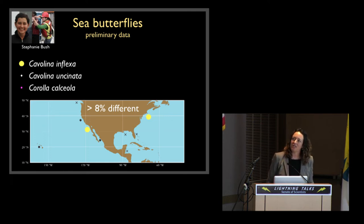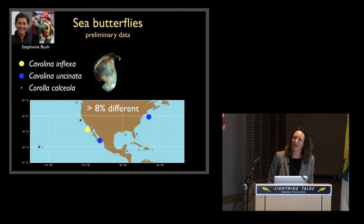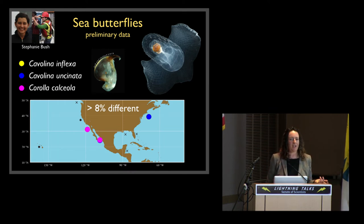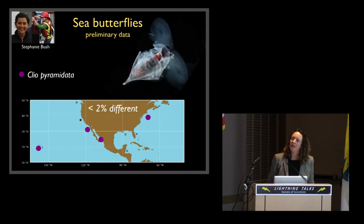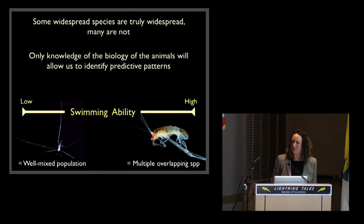She's looked at three species that were supposedly very widespread. Cavolinia inflexa, collected off California and in the North Atlantic, showed greater than 8% genetic difference. Cavolinia uncinata, a similar story. Corolla calceola, found in the Gulf of California and off the coast of California, similarly showed 8% difference. So those three widespread species are actually at least two species each. In contrast, Clio pyramidata, collected off Hawaii, off California, in the Gulf of California, and in the North Atlantic, showed less than 2% difference between any of those samples — so that truly is one widespread species.